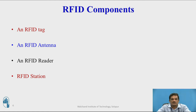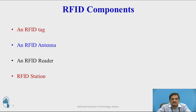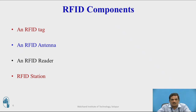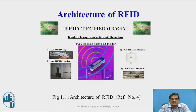These are the components of the RFID system: the RFID tag, RFID antenna, RFID reader, and RFID station. The RFID tag is exposed to the reader, which reads the identification information from the tag. That information is then processed by the processing system and sent to the RFID station, where the user can process and extract knowledge from that particular information.